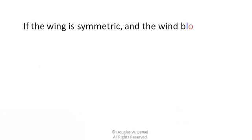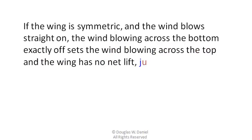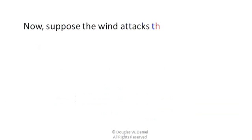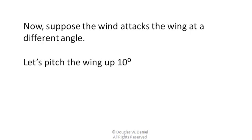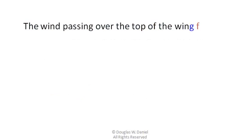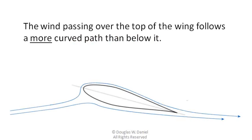If the wing is symmetric and the wind blows straight on, the wind blowing across the bottom exactly offsets the wind blowing across the top and the wing has no net lift — just drag. Now, suppose the wind attacks the wing at a different angle. Let's pitch the wing up 10 degrees. The wind passing over the top of the wing follows a more curved path than below it. The net lift of the wing is now up.